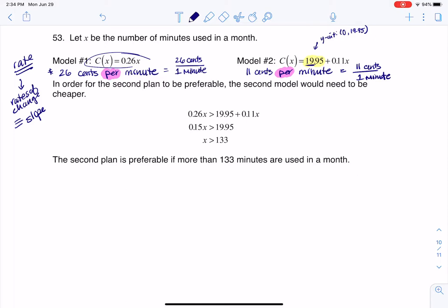So in order for the second plan to be preferable, we have to see how many minutes we would need to make that model cheaper. So I want to see when is the first model greater than the second model. And the reason I'm doing a greater than in that direction is because if the second model is on this side of things, this is the cheaper side of things. And that's what we want. So I go ahead and I have a linear inequality there.